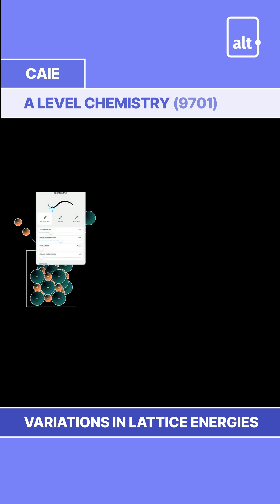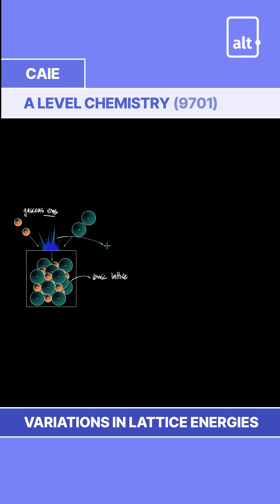When gaseous ions combine to make the ionic lattice, energy is given out as heat. And the stronger the lattice, the greater the energy given out. That's the rule: the stronger the lattice, the greater the energy.